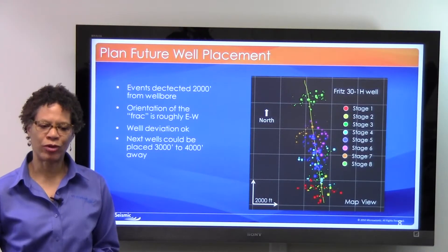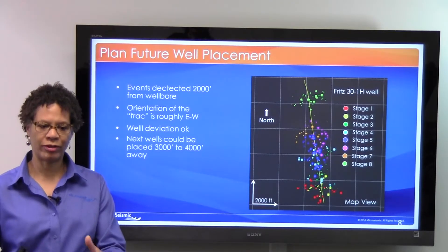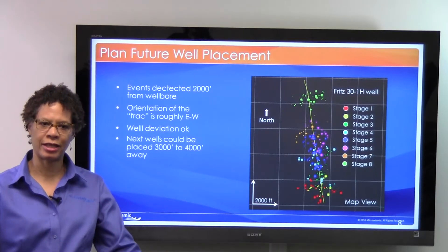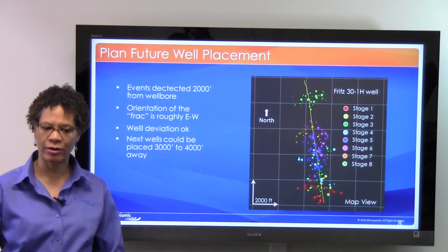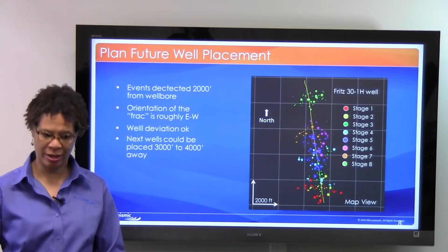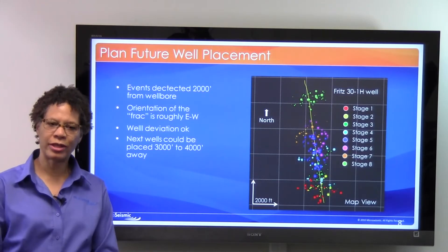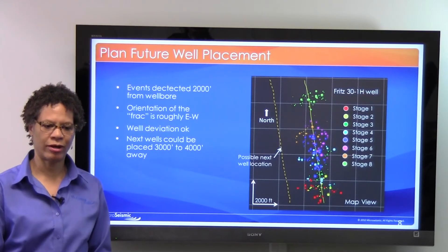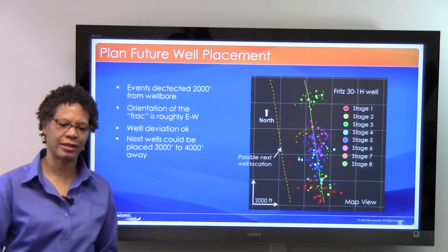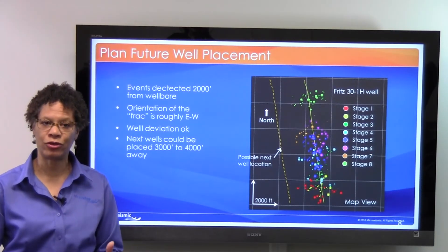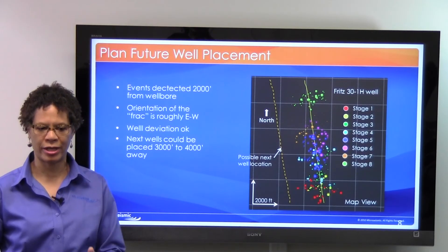Planning for future well placement means you can look at the events. When you monitor from the surface, you can tell the extent to either side of the well — how far out the micro-seismicity happened, in other words how much of the rock you broke. Then you can look at that and decide where to place the next well. Maybe you could place your next well parallel to that, next to that, and maybe even change your stimulation plan so that you can get more of the rock breaking.